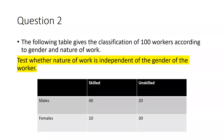Hi everyone. Today we will discuss classification of 100 workers according to gender and nature of work. We are talking about the chi-square test — where we are going to apply it and how we have to get the solution. This table is reflecting classification of 100 workers according to gender and nature of work, and we just want to test whether nature of work is independent of the gender of the workers or not.